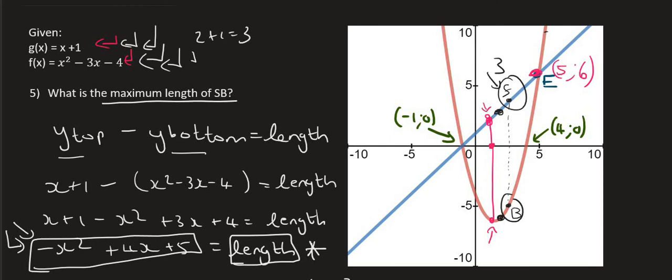You could then plug 2 into the parabola. And so that's going to give us 2 squared minus 3 times 2 minus 4. And that's going to give you minus 6. So that means that this y value over here for the parabola is minus 6.